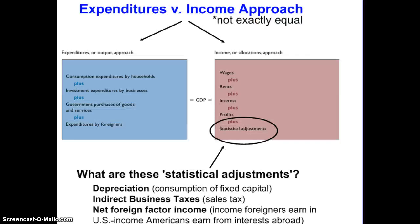The first thing you should know is that these two approaches, although they're not exactly equal, roughly should arrive at the same calculation of GDP. If you think about it, what that's saying is that if a dollar is spent in expenditures — say I buy a haircut, that is an expenditure — it becomes a dollar earned by somebody else. So my hair stylist earns money; I spend it, that's expenditure, someone earns it, that's income. So every dollar spent equals a dollar earned as income by somebody else, so these two approaches to calculating GDP should really come out to be the same thing.